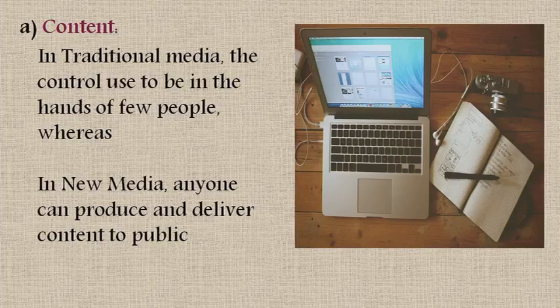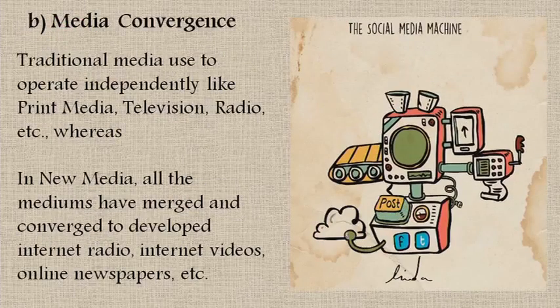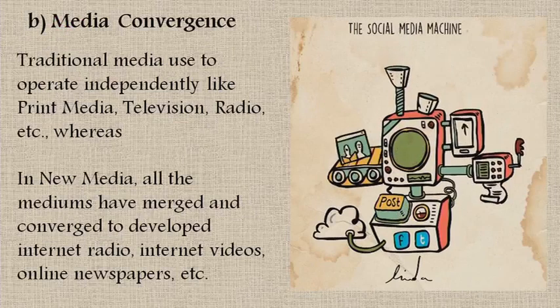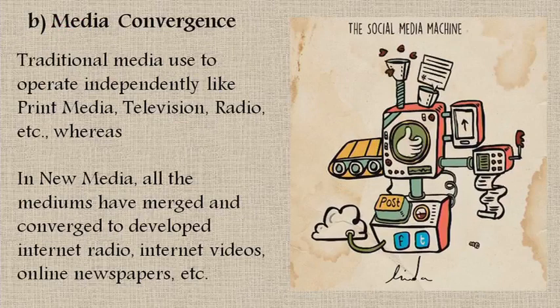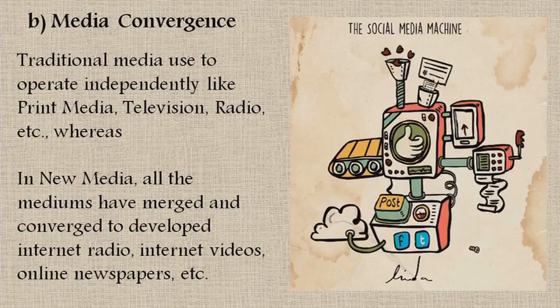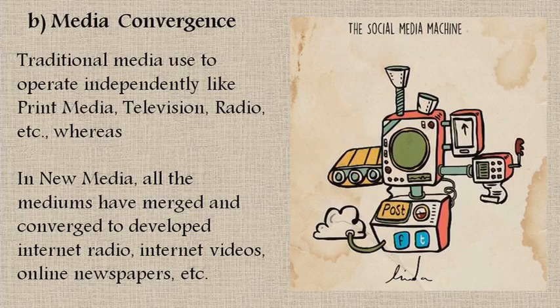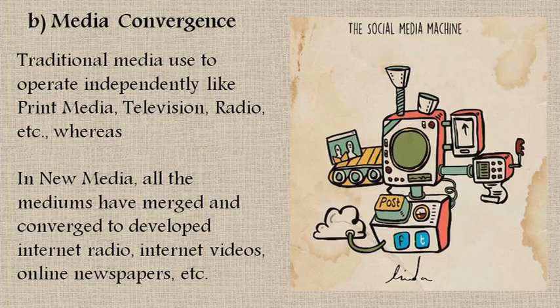The first point of difference between new media and traditional media is content. In traditional media, control used to be in the hands of a few people, whereas in new media, anyone can produce and deliver content to the public. Regarding media convergence, traditional media used to operate independently — like print media, television, radio — whereas in new media, all the mediums have merged and converged to develop internet radio, internet videos, online newspapers, etc.